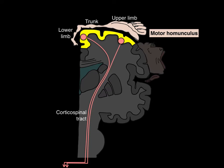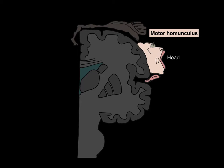These upper motor neurons arise from the cerebral cortex and descend down to the spinal cord. So we call this the corticospinal tract — cortico for cerebral cortex, spinal for spinal cord, tract.